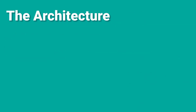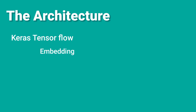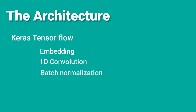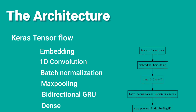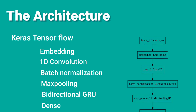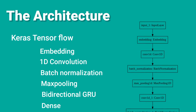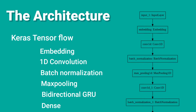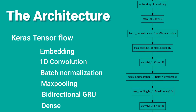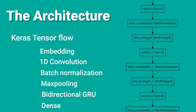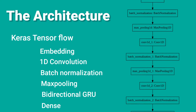Talking about the architecture, the neural network model was created using Keras with TensorFlow. It includes multiple layers including embedding, one-dimensional convolution, batch normalization, max pooling, bidirectional GRU, and dense layers. The model input is an embedding layer, which requires that the input data be integer encoded so that each word is represented by a unique integer. The embedding layer is initialized with random weights and will learn an embedding for all of the words in the training dataset. The output is then fed into four blocks of one-dimensional convolution.